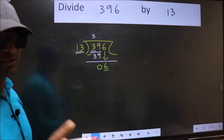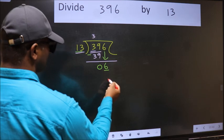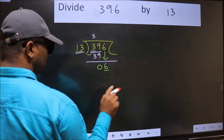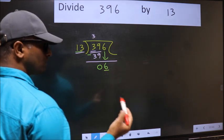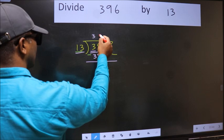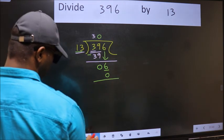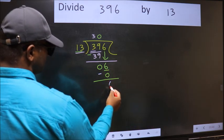Instead, what you should think of doing is which number should we take here. If I take 1, we will get 13, but 13 is larger than 6. So what we should do is we should take 0. So 13 into 0, 0. Now we should subtract. 6 minus 0, 6.